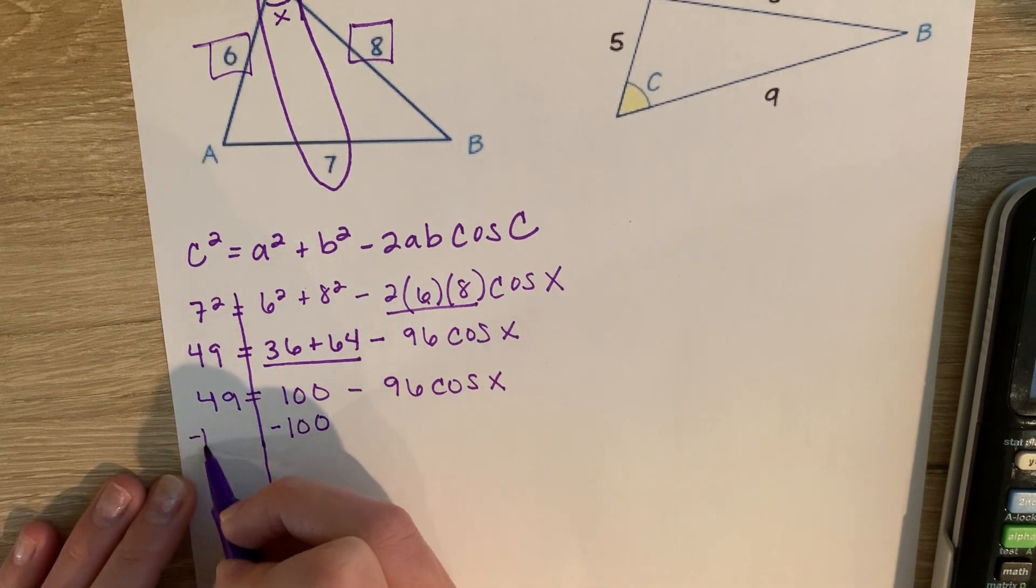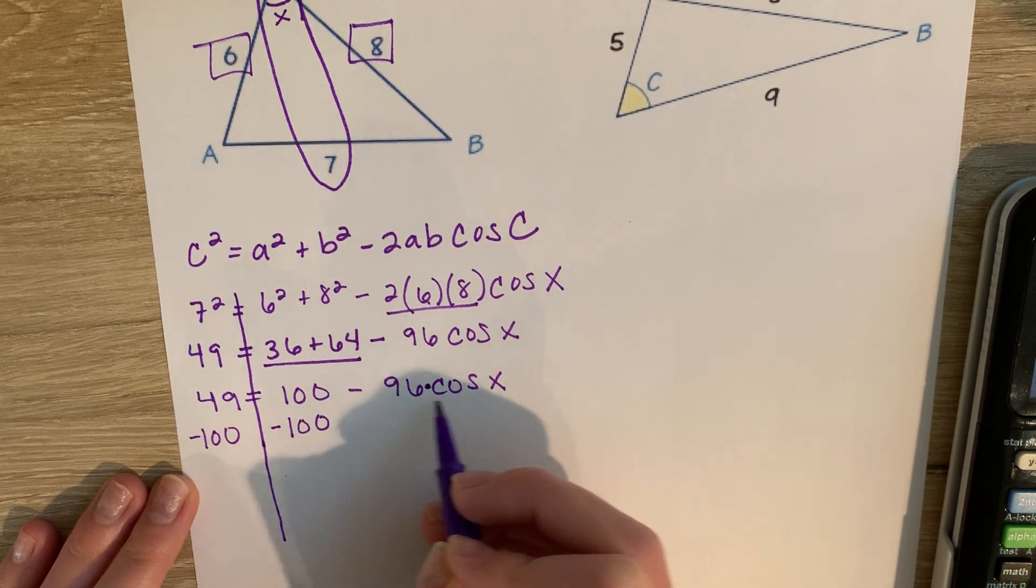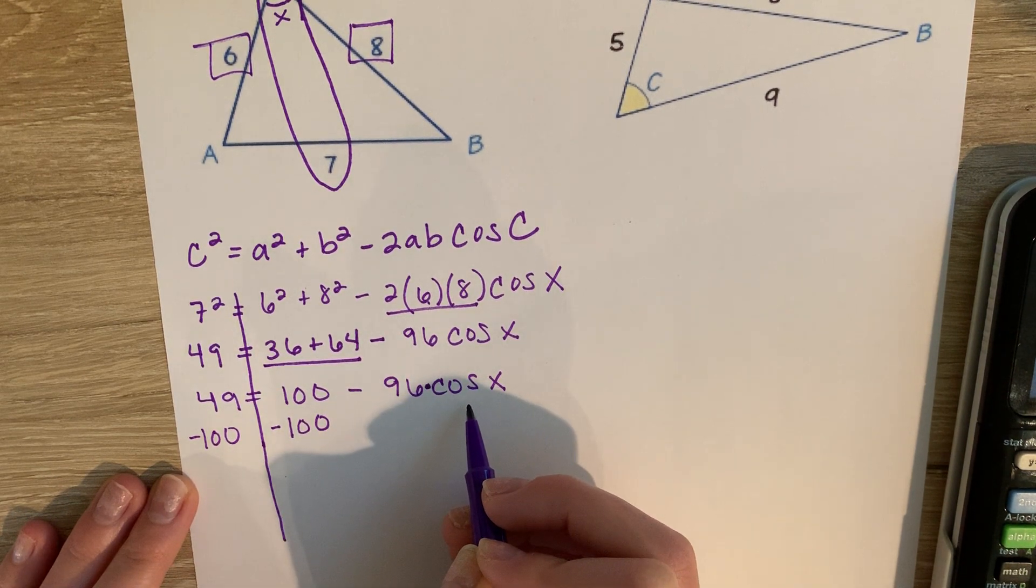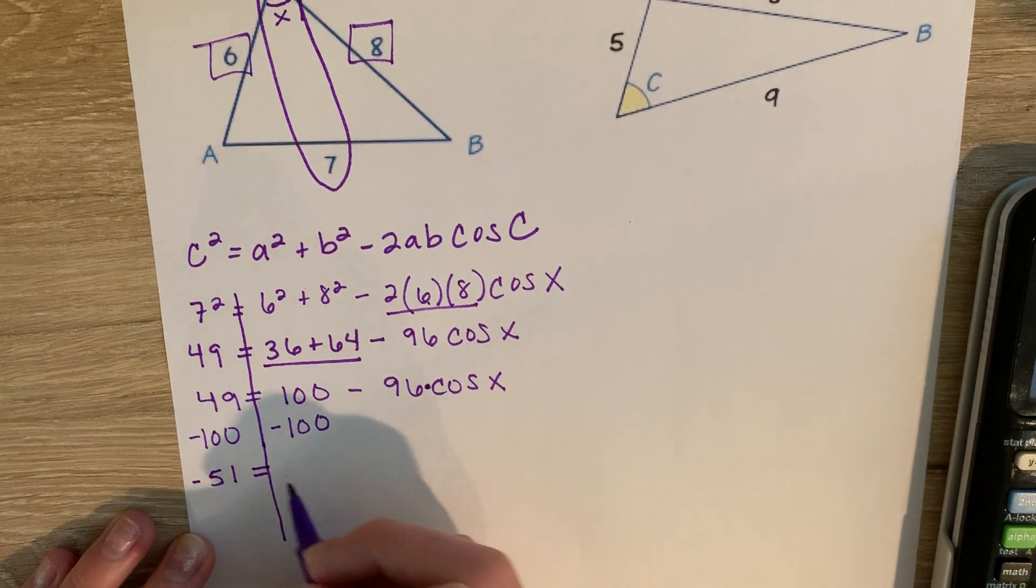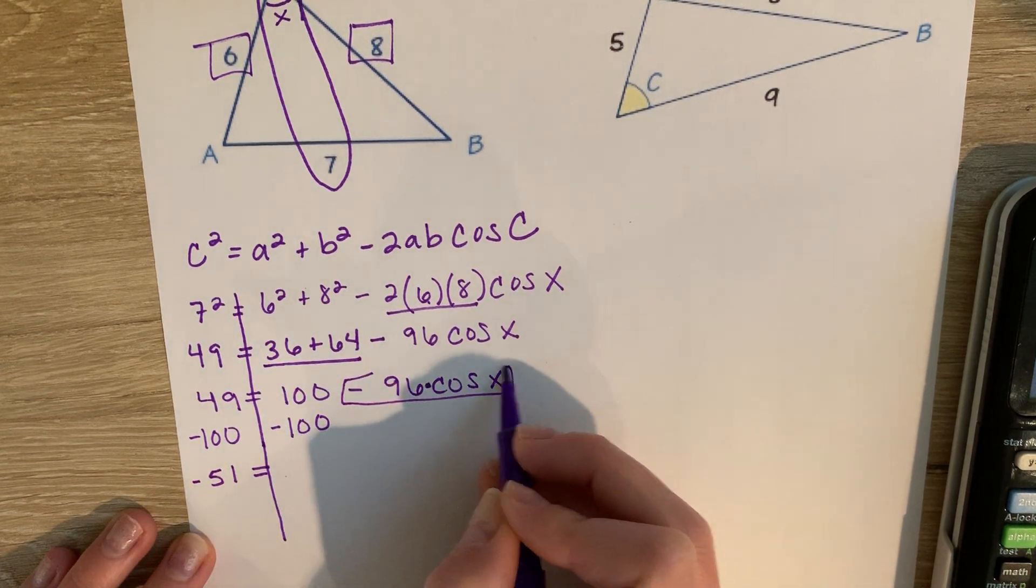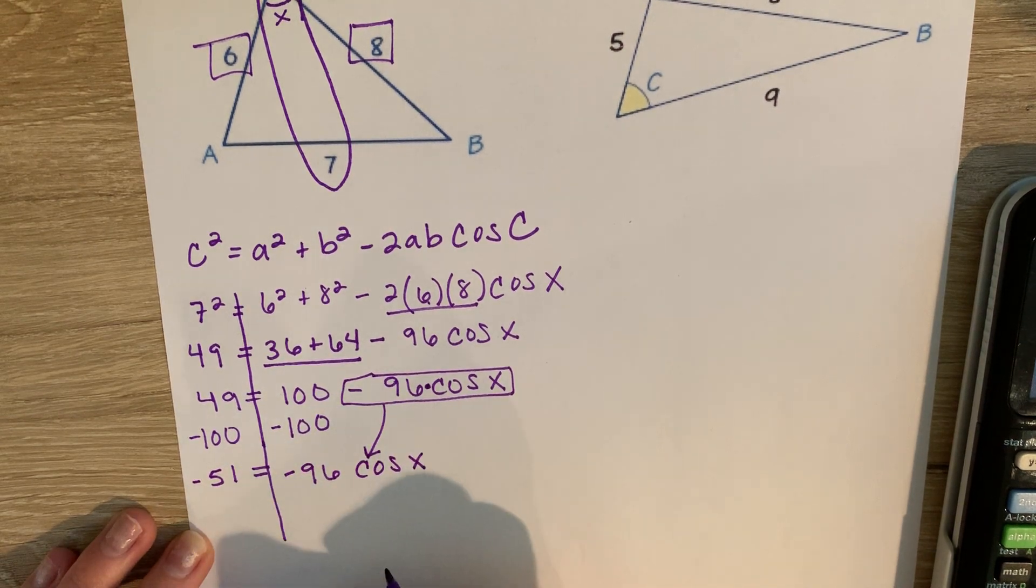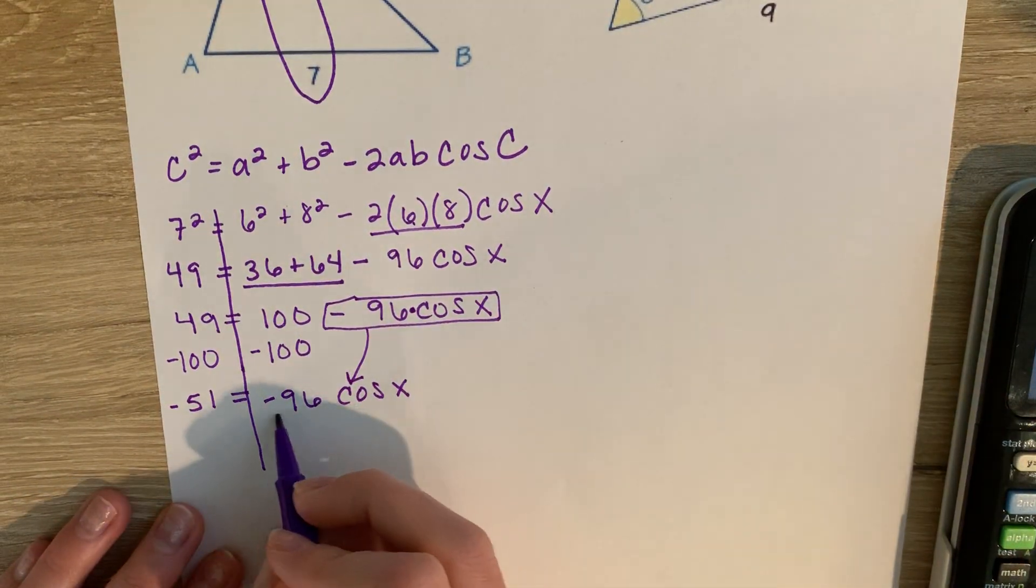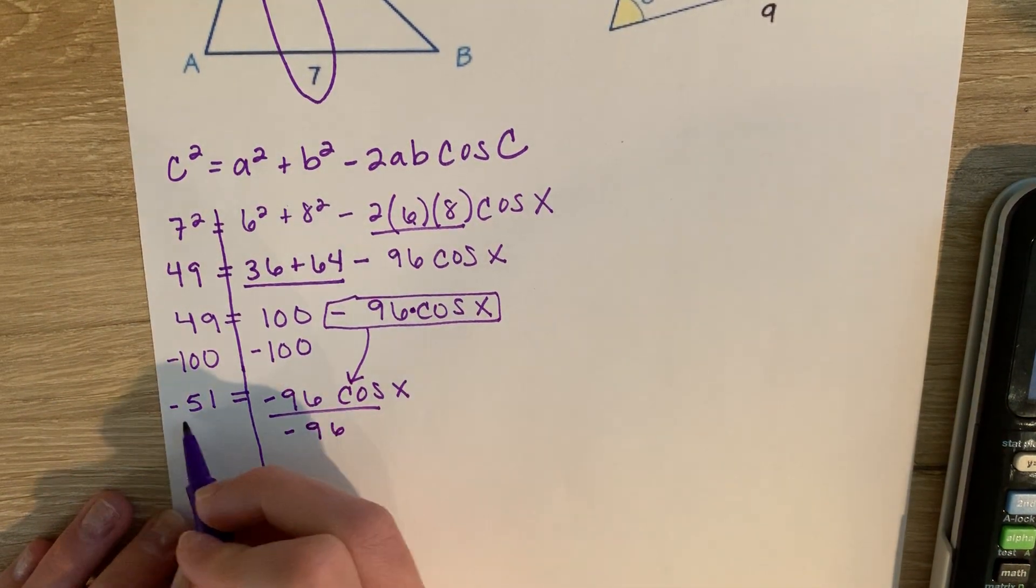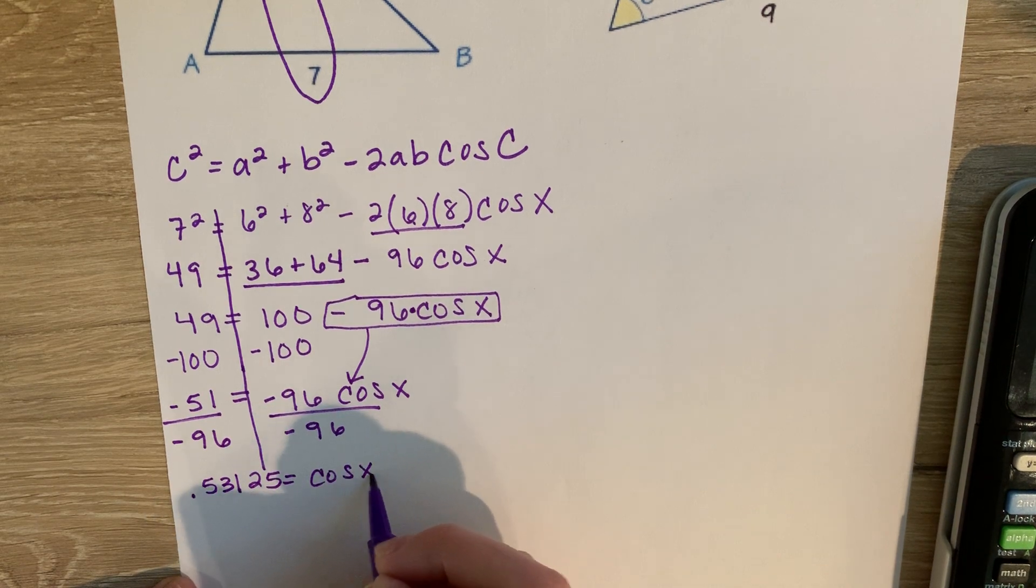And now I need to solve for x. So I'm going to subtract 100. Again, I cannot combine 196 together because 96 is connected to the cosine by multiplication. So here I get negative 51 equals, don't forget that this negative comes down with the 96 times cosine of x. So this is just algebra that I'm doing right now. I'm going to divide by negative 96, and I get approximately 0.53125 equals cosine of x.